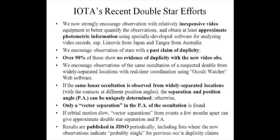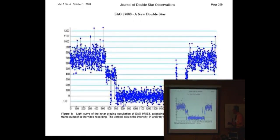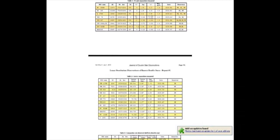If the same lunar occultation is observed from widely separated locations, we can get a unique separation and position angle. But a single observation gives just a single so-called vector separation of the two components in the position angle of the occultation. Results are published in JDSO periodically. This shows one of our grazing occultation results where it was videotaped and you can see very nice step events with the different components. The top of the published list is where we have multiple observers and are able to get unique separation and position angle; the lower section shows where just vector separations were determined.